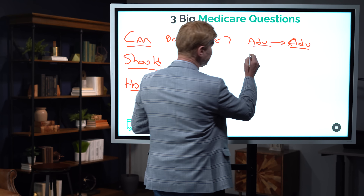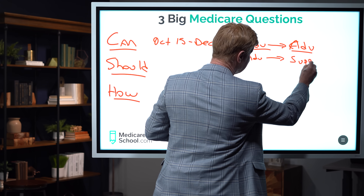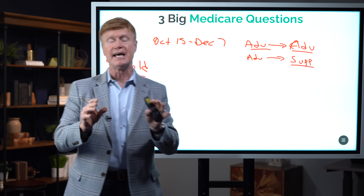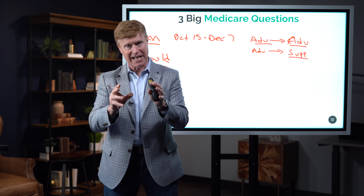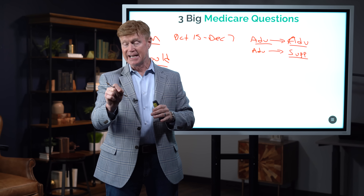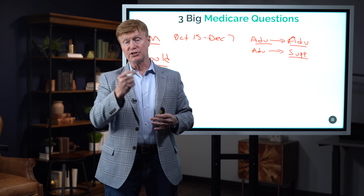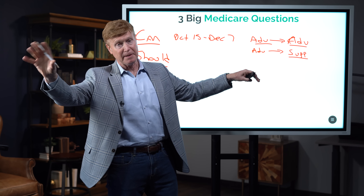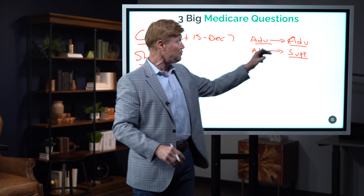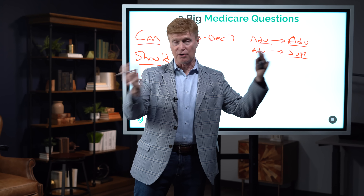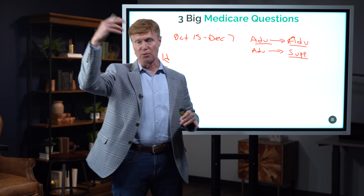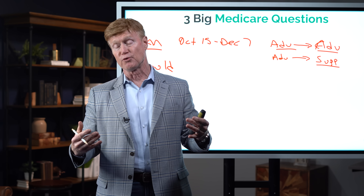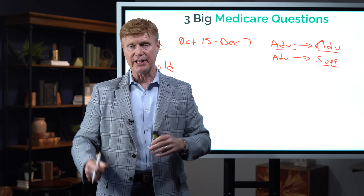If you're on an Advantage plan, you can also switch to a Supplemental plan. However, in 46 of the 50 states, you'll have to medically qualify to make that switch. The four states that don't require medical underwriting are New York, Connecticut, Massachusetts, and Maine — though Maine only allows a Plan A without medical qualification. In all other states and U.S. territories, if you've been on an Advantage plan more than a year and want to switch, you'll have to go through medical underwriting: 25 to 30 health questions, a medication review going back 24 months, and possibly a doctor's statement.